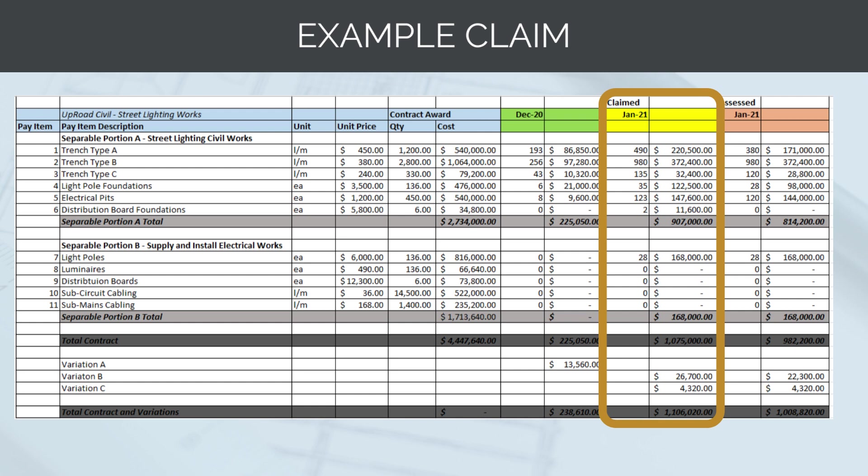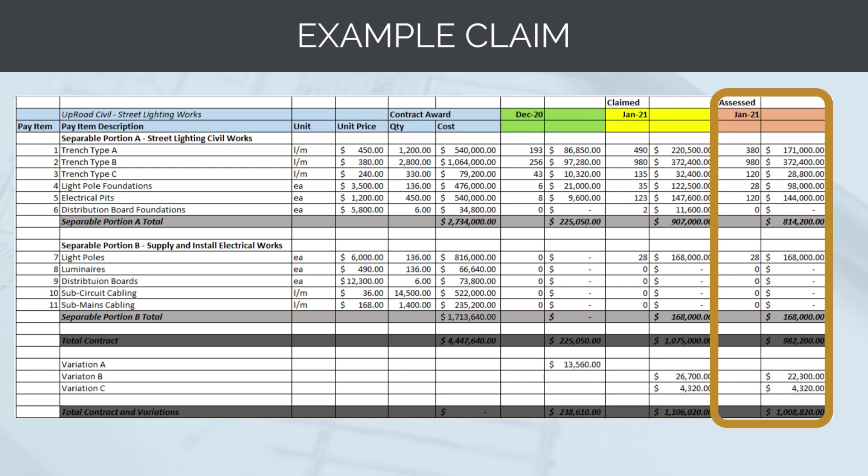Under the orange heading, we have our assessment of the claim. As the head contractor, we need to assess this claim for what we believe it is worth. While Uproad Civil are claiming 490 metres of trench type A, we believe they have only completed 380 metres. Similarly, they are claiming two distribution board foundations but we believe they haven't completed any — most likely because although they have substantially completed two, there may be outstanding defects and thus we are unwilling to pay for them. In summary, our assessment of the claim comes out at $1,008,820. A copy of this example claim is attached to the course notes.